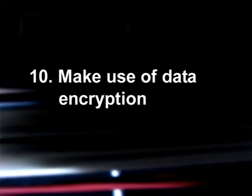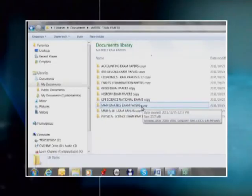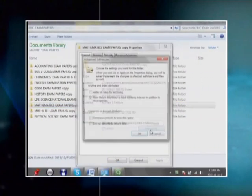If you want to ensure your privacy or protect important data from unauthorized access, you could use data encryption. Encryption is simply a way of scrambling text or data into a new format using a specified set of rules, making it impossible for other people to understand. You probably wouldn't need to encrypt all the data on your computer, but you might want to encrypt personal notes or diary entries. A teacher could decide to encrypt all the files in her exams folder so that if a learner gained access to her computer, the files would be useless.